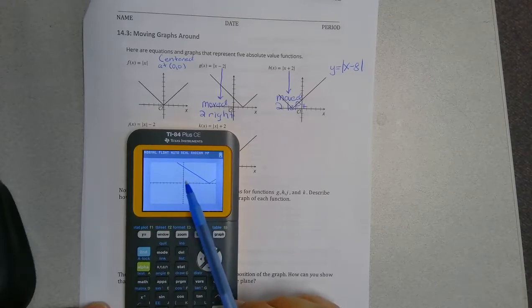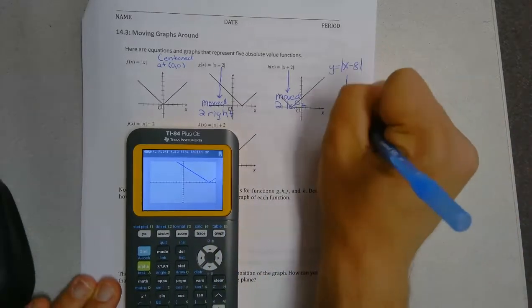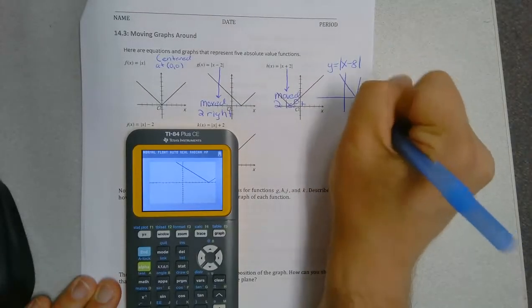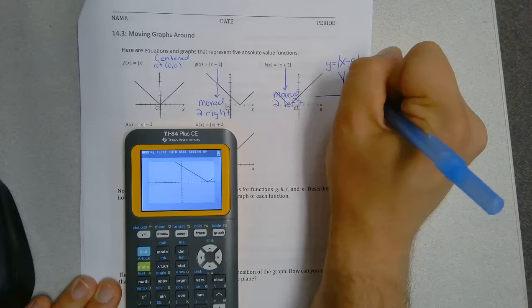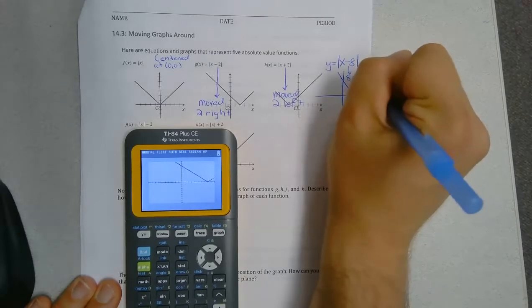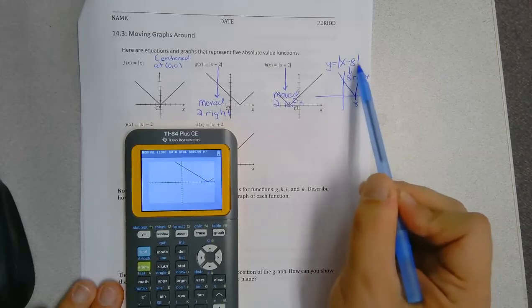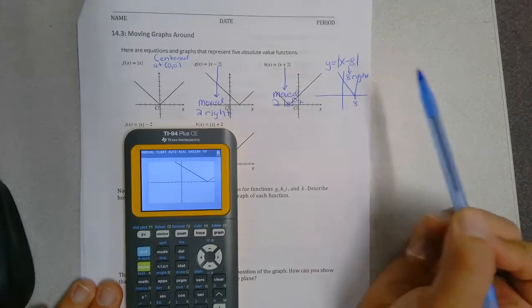And you notice the center of this looks like that. So it was moved eight spots to the right. So I'm just going to mark this as 8 and move that eight spots to the right. So when you're inside underneath the absolute value function and you subtract, you move that many units right.